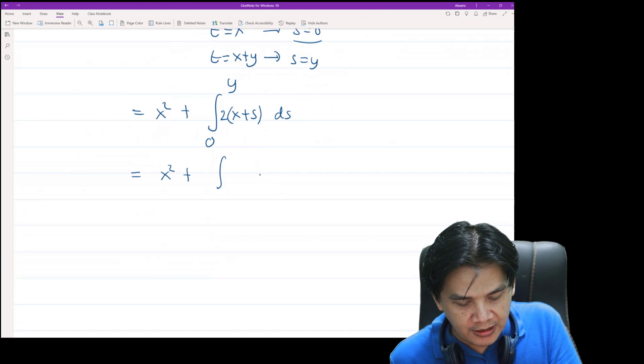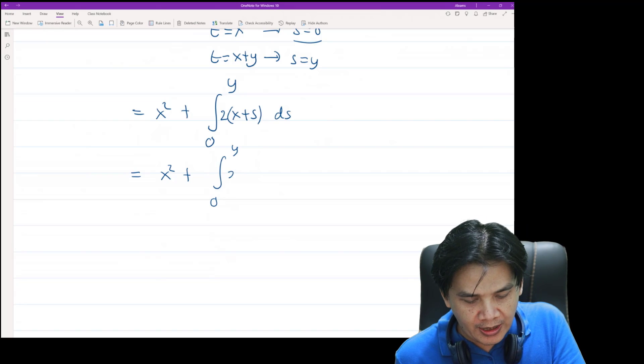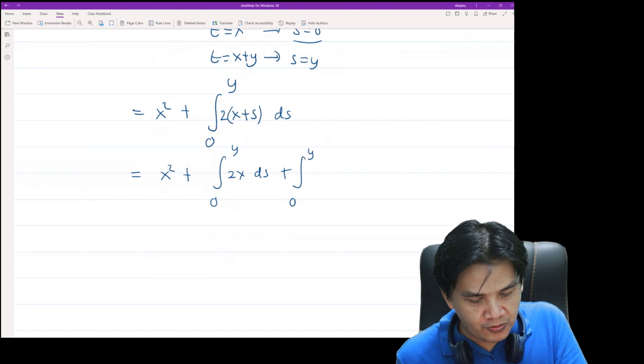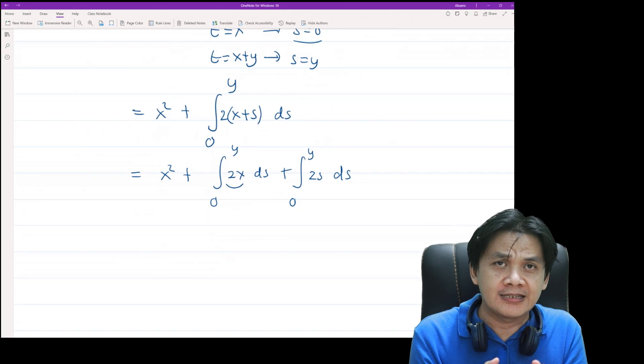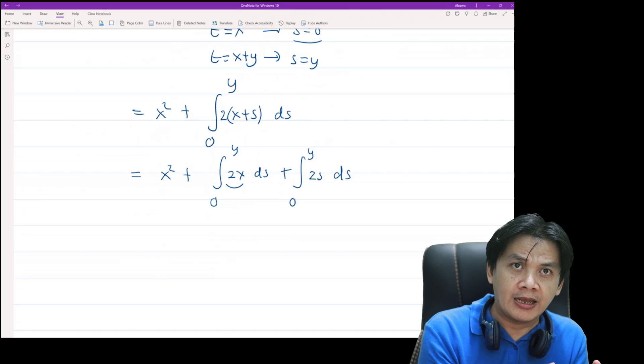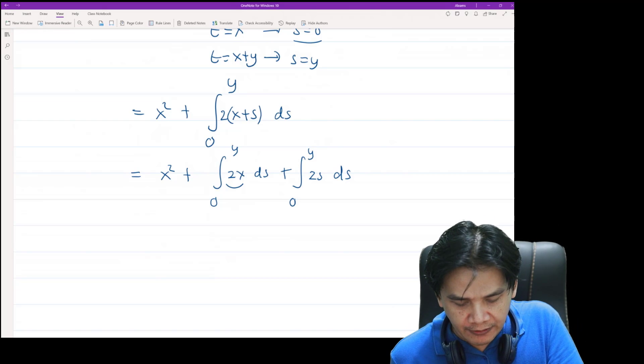Okay, so I think it is okay to use the distributive property, so 2x ds plus integral from 0 to y of 2s ds. Okay, so we can pull out 2x in front of the integral, so then we have x squared plus 2x integral from 0 to y of 1 ds plus integral from 0 to y of 2s ds.